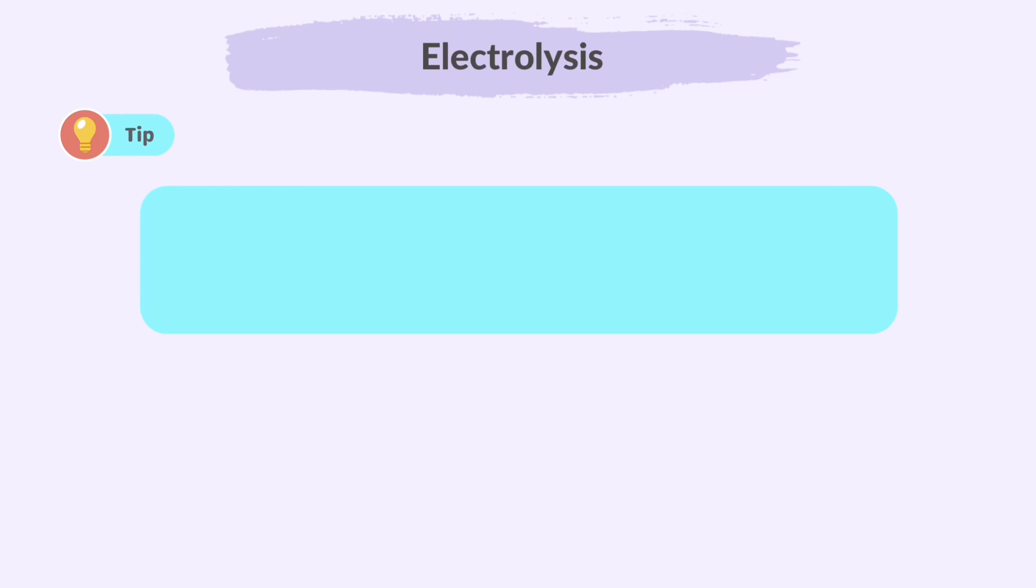Here's a tip to remember which electrode is positive and which is negative. A cathode attracts cations. That's easy to remember since both start with cat.